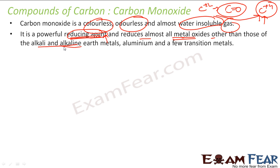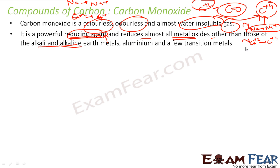Sodium has a greater tendency to become Na⁺ than carbon (+2) has to become carbon (+4). So sodium is a stronger reducing agent than carbon, and you cannot reduce sodium using carbon. Aluminum also has a higher tendency to form Al³⁺ from Al than carbon has to go from C²⁺ to C⁴⁺. These metals are stronger reducing agents than carbon but they are costly, so in industry, carbon monoxide is generally used instead of sodium or aluminum.